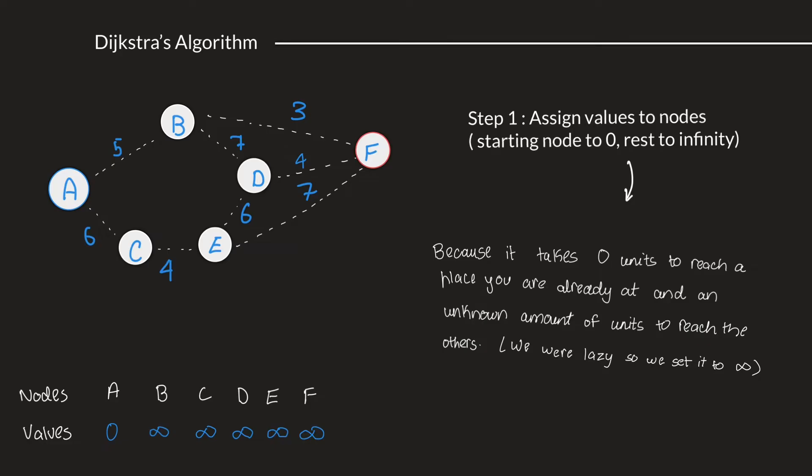What we would first do is write down all the nodes and the values. Except for A, because we are starting at that node, we put down the values for all the other nodes as infinity, because it takes you 0 units to reach the place you already are. If I'm already at A, it'll take me 0 minutes, or I'll have to travel 0 kilometers to reach there. And all the other nodes, for this moment, we'll assign them a value of infinity, because we haven't yet calculated the shortest path to that particular node.